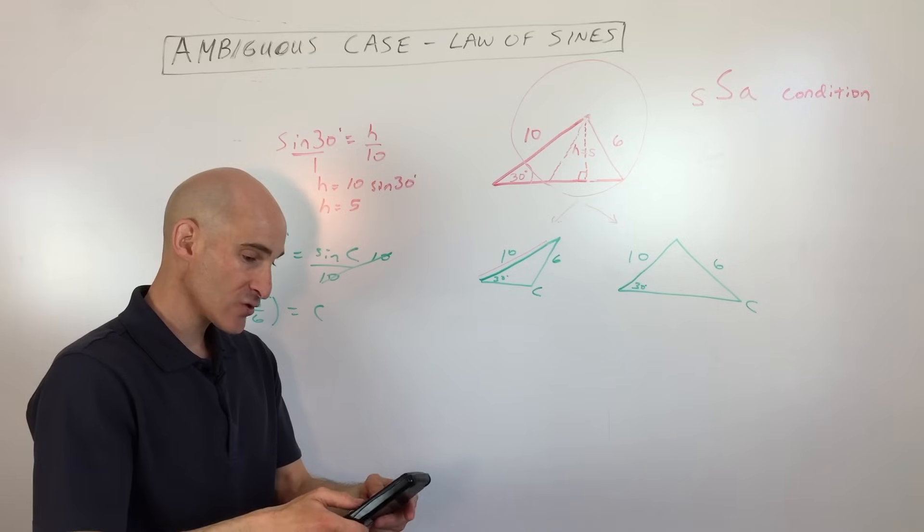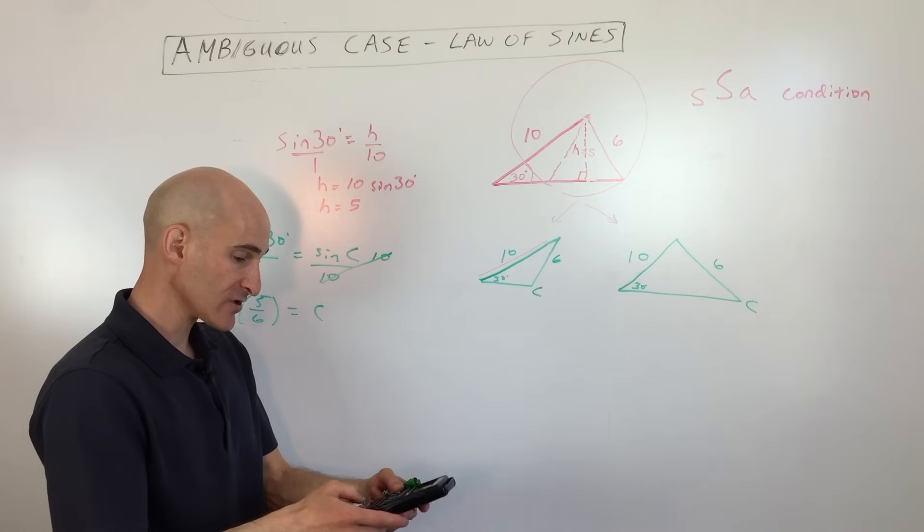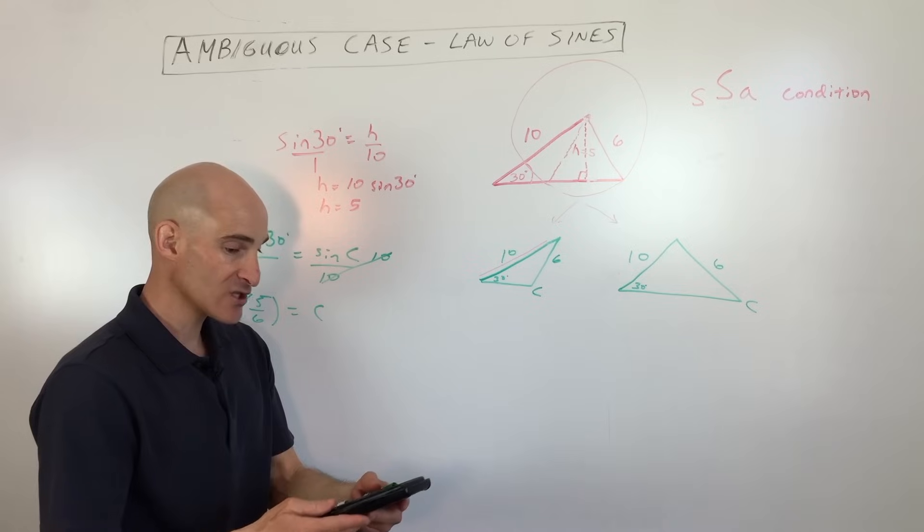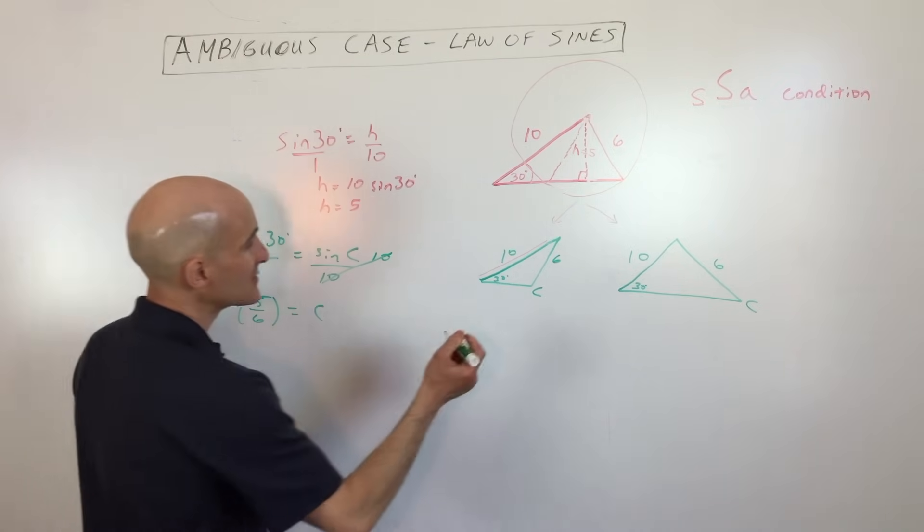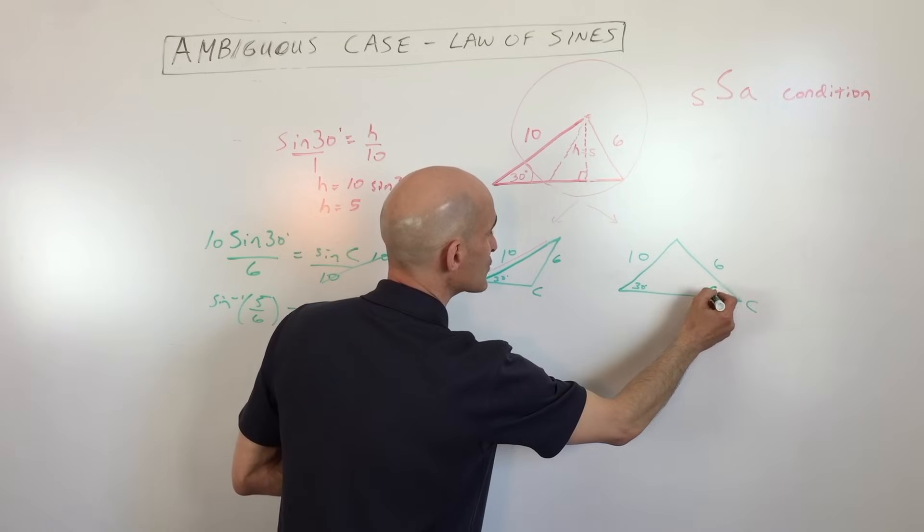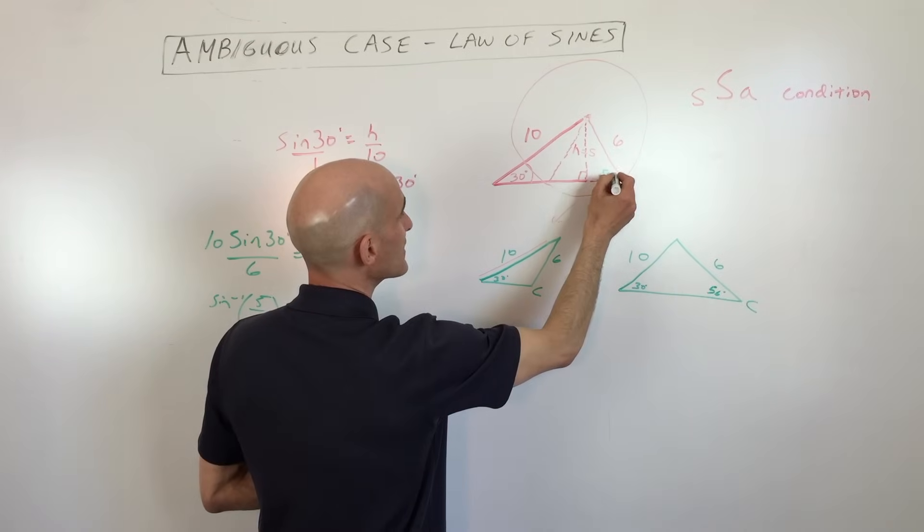And let's just make sure we're in degrees. Okay, so we're going to do the sine inverse of five-sixths, which comes out to fifty-six degrees. Okay, so now you can see this angle here is going to be the fifty-six degree one, which is right here, fifty-six.